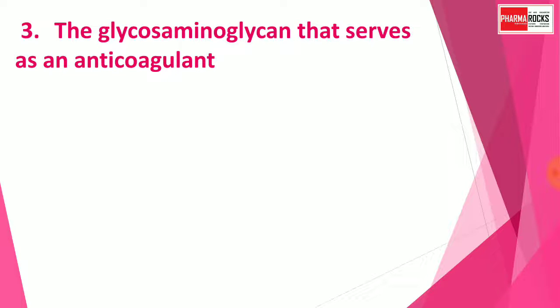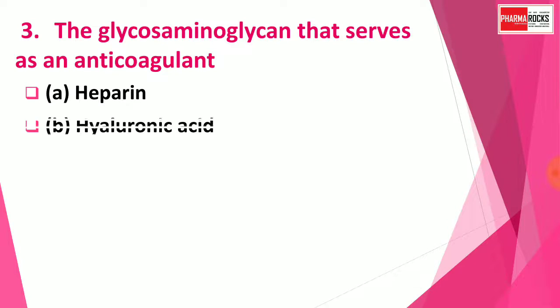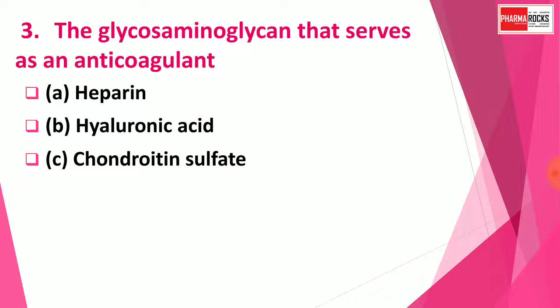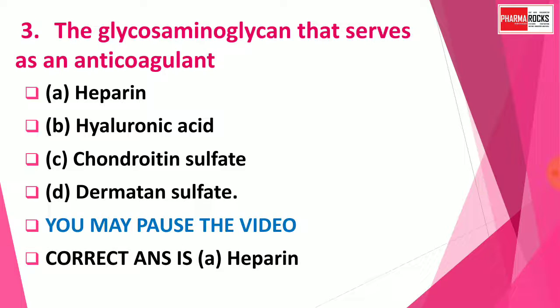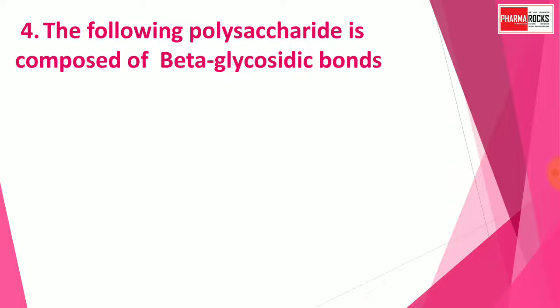Question 3: The glycosaminoglycan that serves as an anticoagulant is — Option A: Heparin, Option B: Hyaluronic acid, Option C: Chondroitin sulfate, Option D: Dermatan sulfate. You may pause the video to think about the correct answer. The correct answer is Option A: Heparin. Heparin is an anticoagulant.